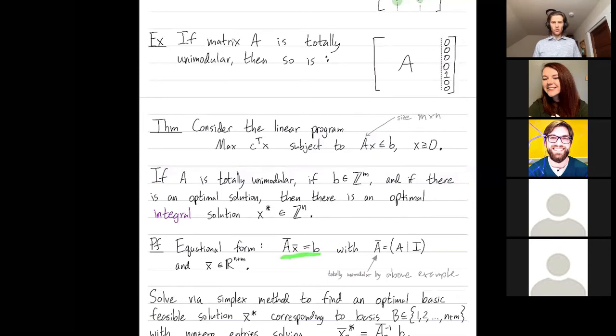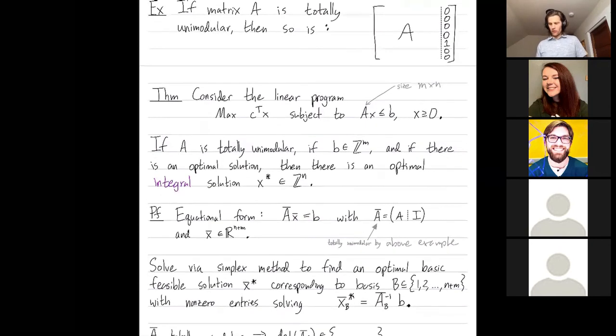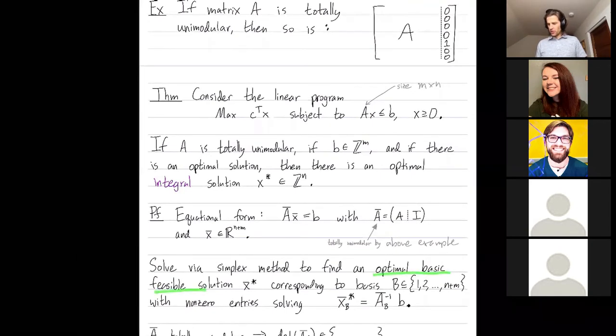So we solve A bar x bar equals b using the simplex method. You find an optimal basic feasible solution, x bar star. The star implies it's optimal. That optimal basic feasible solution has a corresponding basis, which is a subset of the variable indices. And then when I restrict this vector, this optimal vector to the entries in the basis, those are the only possible entries that can be non-zero. And you can solve for those possibly non-zero entries just by doing the following.